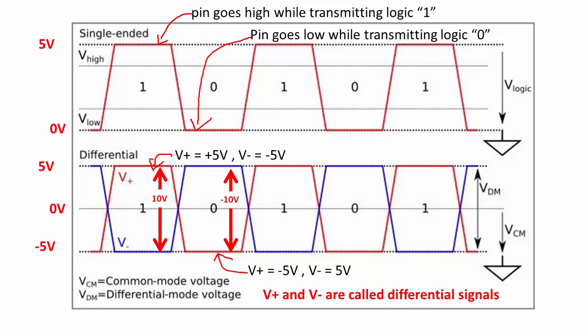The receiver extracts information by detecting the potential difference between inverted and non-inverted signals. To send logical zero, signal one becomes -5 volts and signal two becomes +5 volts. The difference is now -10 volts, and that is considered logical zero by the receiver.